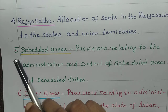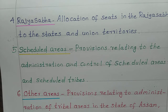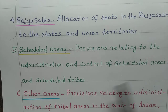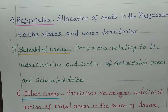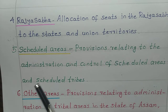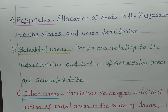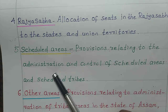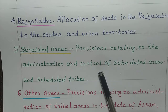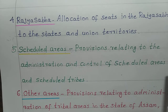Fifth schedule: keyword is scheduled areas. Schedule five deals with the provisions relating to the administration and control of scheduled areas and scheduled tribes.